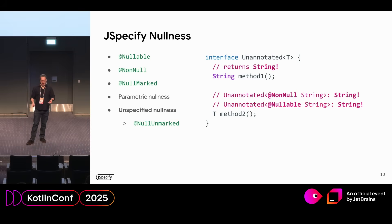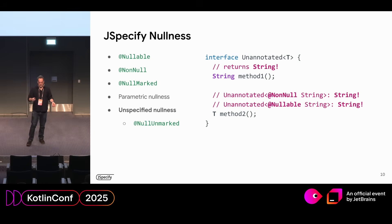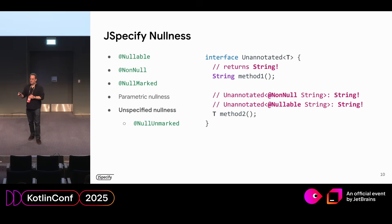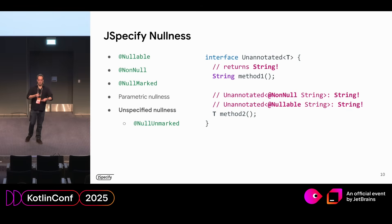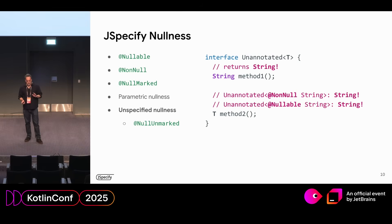JSpecify also has documentation and rules for the semantics of legacy types that don't have nullness information — what Kotlin calls platform types and what we call unspecified nullness. In an unannotated class, you're back to method one that returns String. Even method two, which returns a type parameter — even if you have an instance of Unannotated with not-null String, it'll actually return a platform type. It's not great, but at least it has specific rules that everybody can agree with and follow. There's also an annotation called @NullUnmarked — a way to back out of @NullMarked — which is helpful if you have a large Java API surface you want to annotate bit by bit.